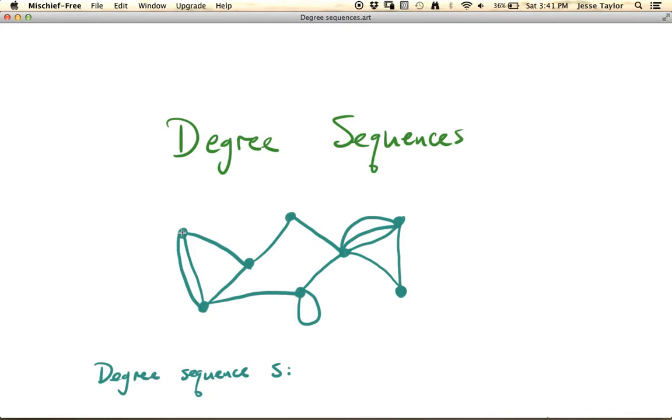So remember, the degree of a vertex is the number of edges that go into that vertex, so the degree here will be 3, the degree here will be 4, the degree here will be 3.